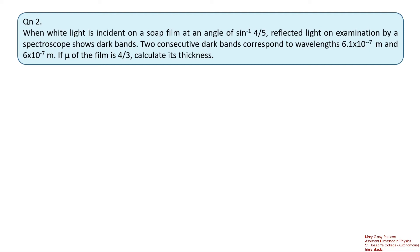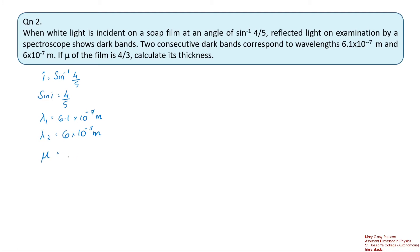Let us write down the given parameters. Here i = sin⁻¹(4/5), that is sin i = 4/5. We see dark bands from two wavelengths: λ₁ = 6.1×10⁻⁷ m and λ₂ = 6×10⁻⁷ m. The refractive index of the soap film is given as 4/3. We see two dark bands, so let us use the condition for destructive interference for two wavelengths.